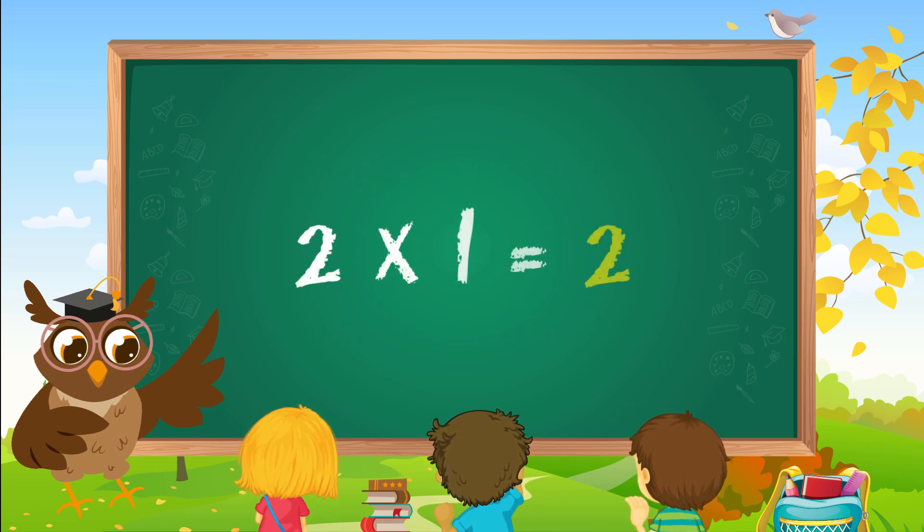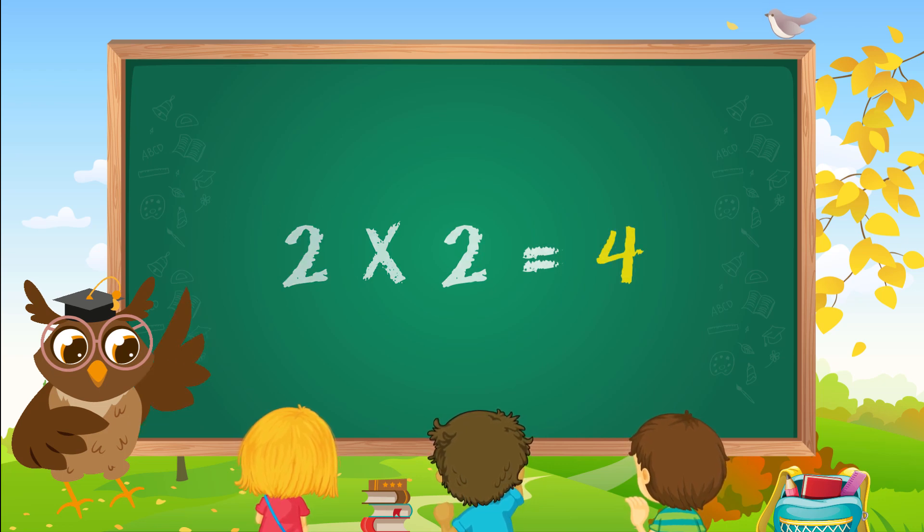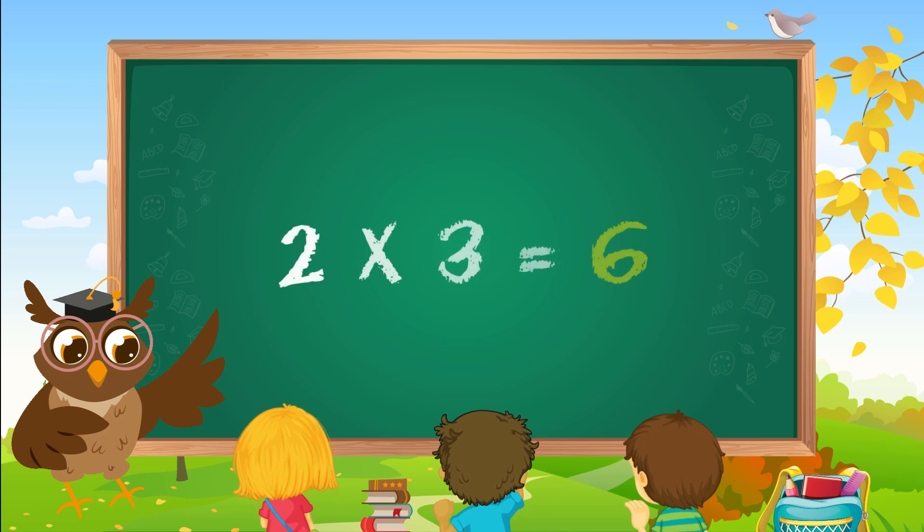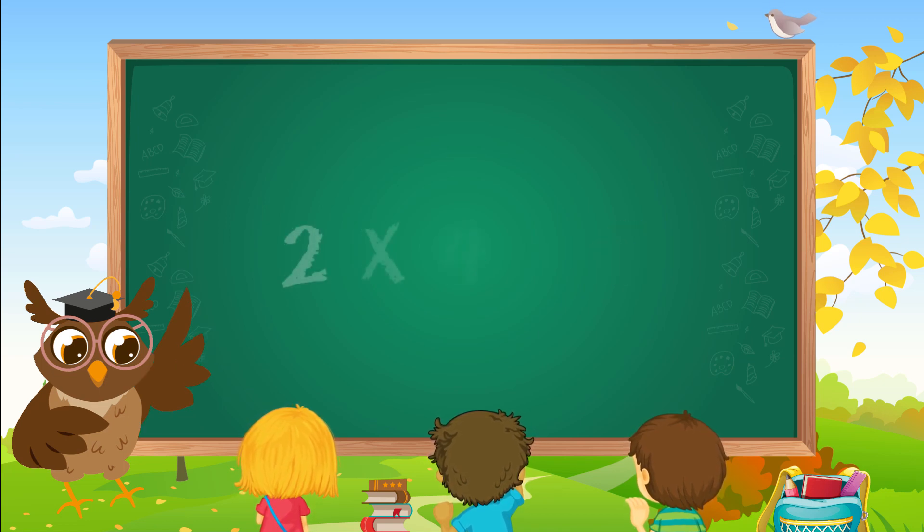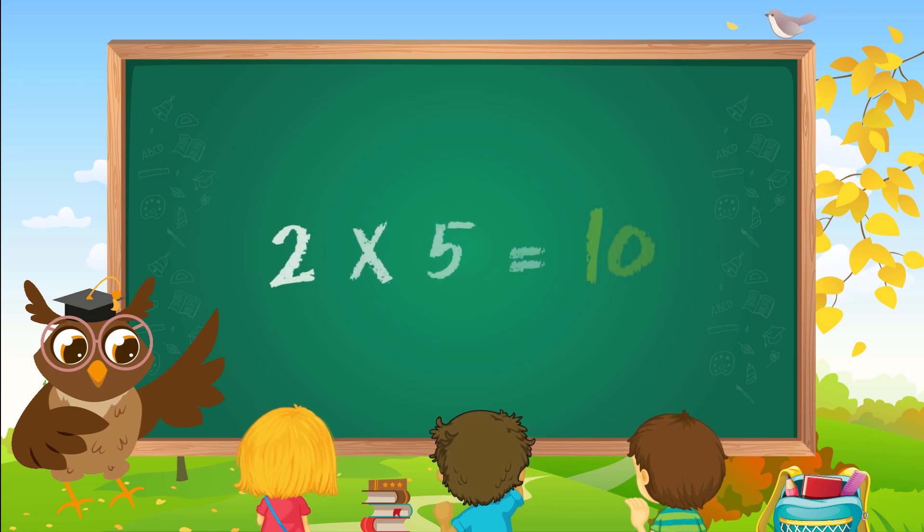Two ones are two. Two twos are four. Two threes are six. Two fours are eight. Two fives are ten.